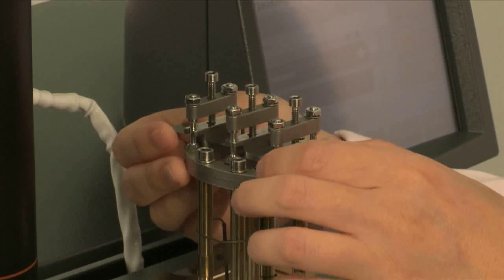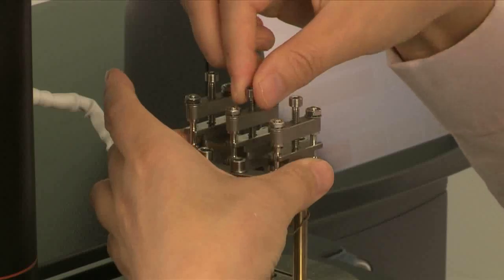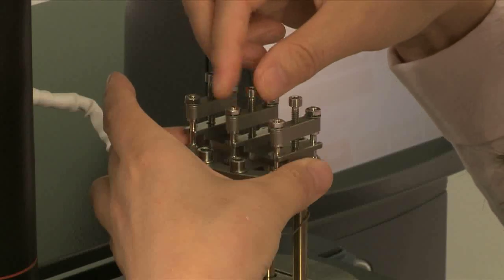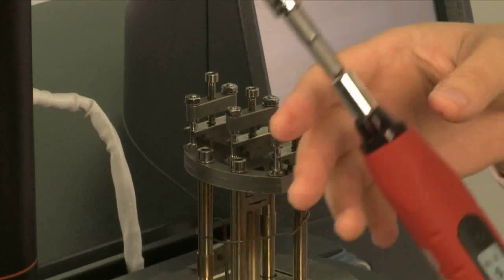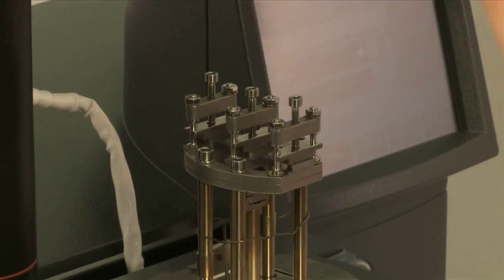Then, load this bar to the clamp. Use this torque wrench with a torque range of 8 to 10 inch pound to tighten the screws.